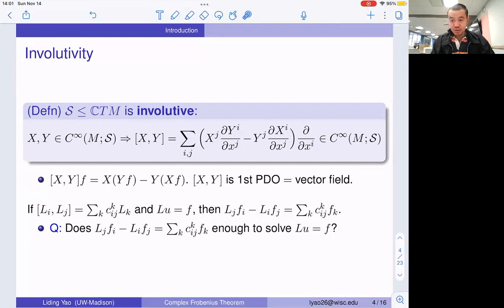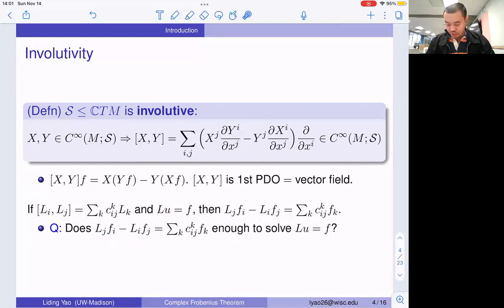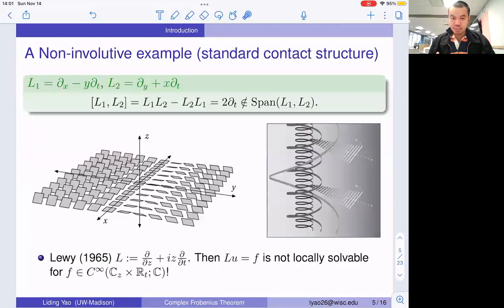Now we have the necessary conditions, and people naturally ask: when is the necessary condition also sufficient? So when is this condition sufficient? To answer that, I am going to give you an example where the condition is not sufficient.